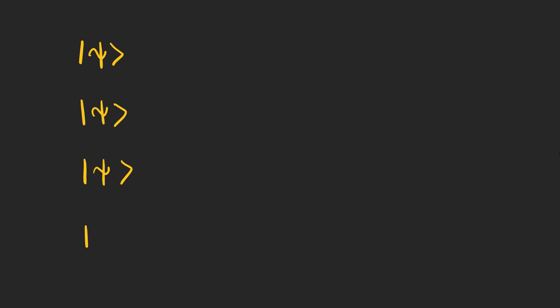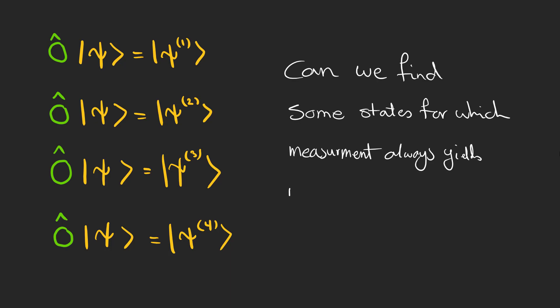Suppose that we have an ensemble of identically prepared systems, and we measure an observable called O on them. The act of measurement yields different results because of the nature of measurement in quantum mechanics. But, can we find some states for which measuring always gives the same result?